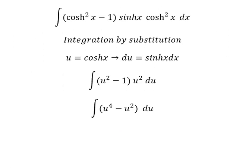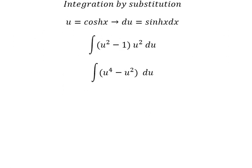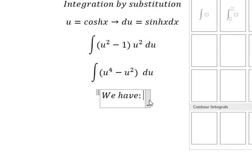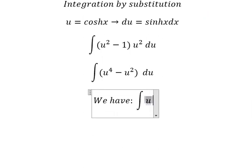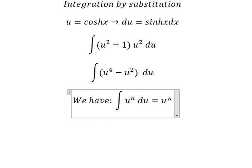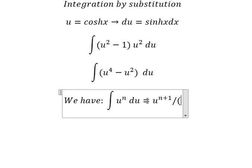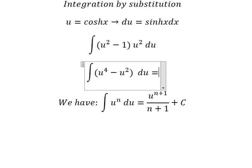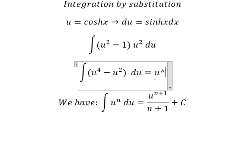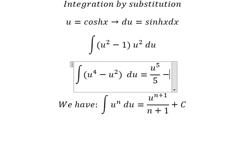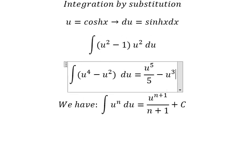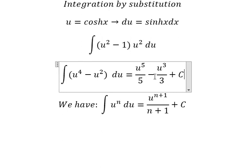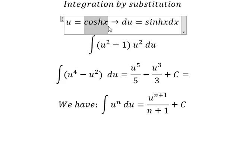Next we have the formula: the integration of u to the power of n du equals u to the power of n plus 1 over n plus 1 plus C. So this one we will have u to the power of 5 over 5 minus u to the power of 3 over 3 plus C, where u is coshx.